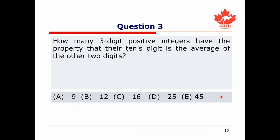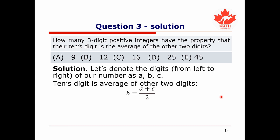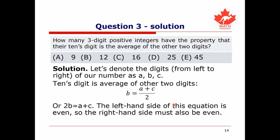We're now ready for our third and final question, which asks: how many three-digit positive integers have the property that their tens digit is the average of the other two digits? Let's denote the three digits by A, B, and C. We need B to equal (A + C) / 2, which means 2B equals A plus C.